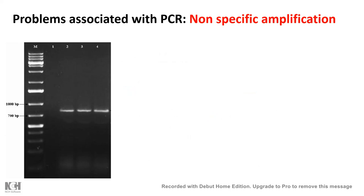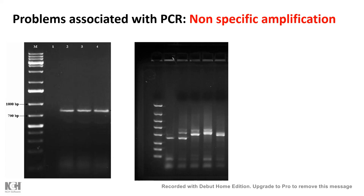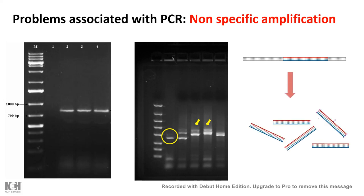Now let's discuss the problems associated with PCR. One problem is non-specific amplification — you get bands in regions where you are not supposed to get them. You might get your desired band, but along with it you get non-specific bands. As you can see, this is our desired band size, but there are multiple other bands at other lengths. It turns out that along with your sequence of interest, some random sequences are also getting amplified, causing this non-specificity.